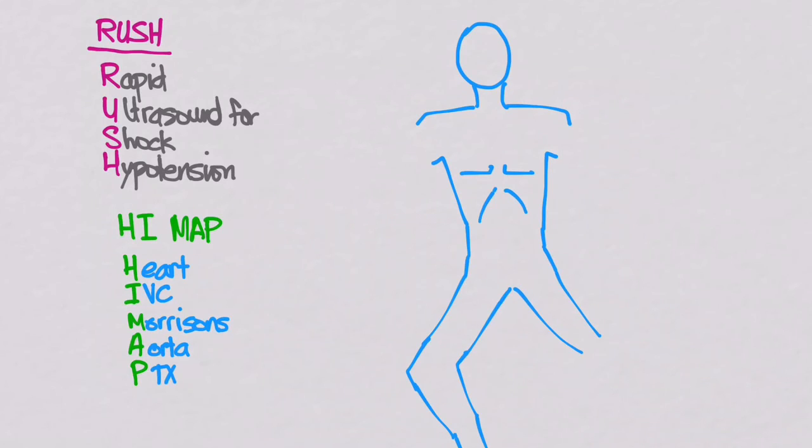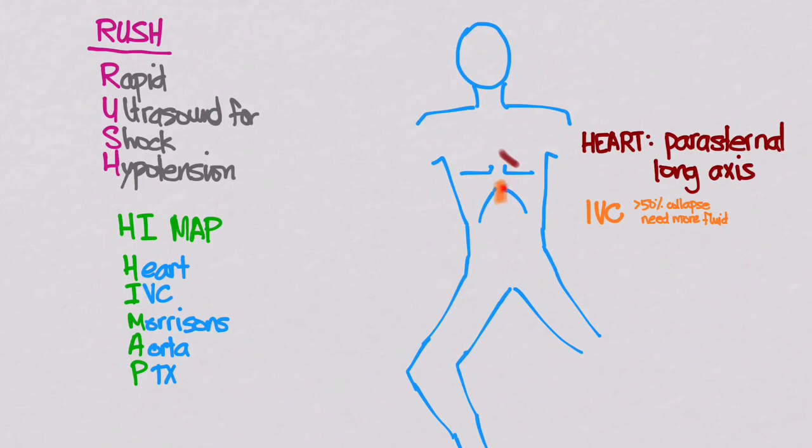All the places that you want to look. The heart, the IVC, Morrison's pouch, the aorta, and look for a pneumothorax. This is just a screening exam. So it's just something you can do quickly at the bedside. So we'll just go over these very quickly. And maybe in another video, we'll go through this in more detail. So first thing you're going to look at is the heart, right? So you're going to do a parasternal long axis and you get a good view of the heart. Next, you look at the IVC, looking for fluid responsiveness. And if you can see 50% collapse of the IVC, you think, then this guy needs more fluid.